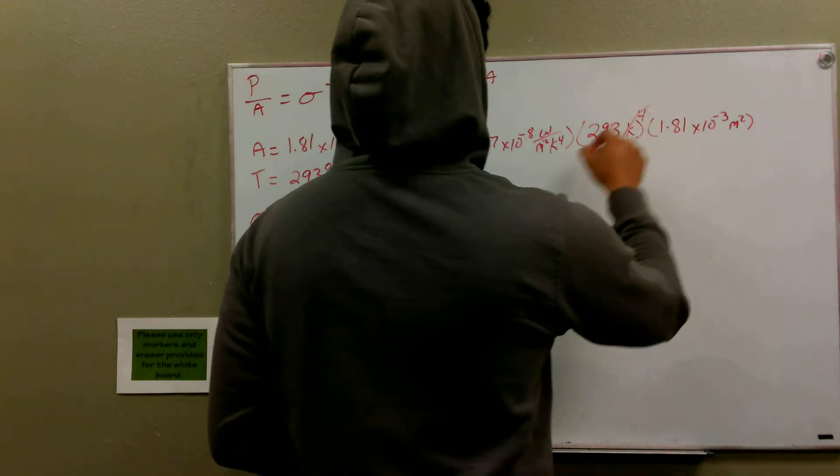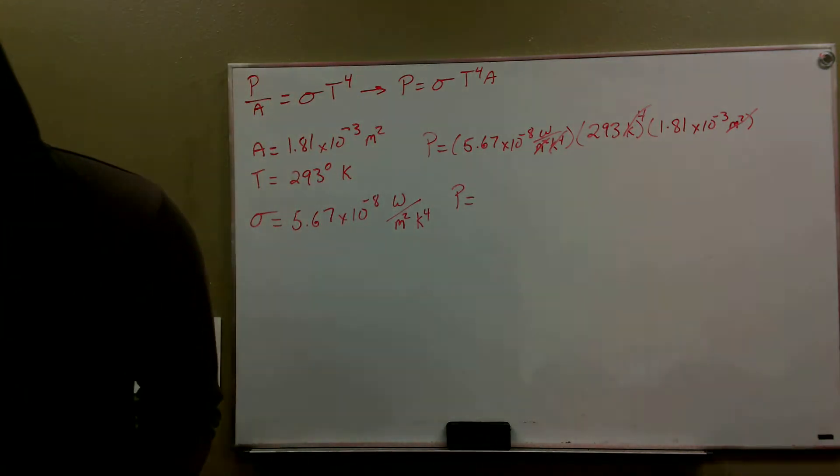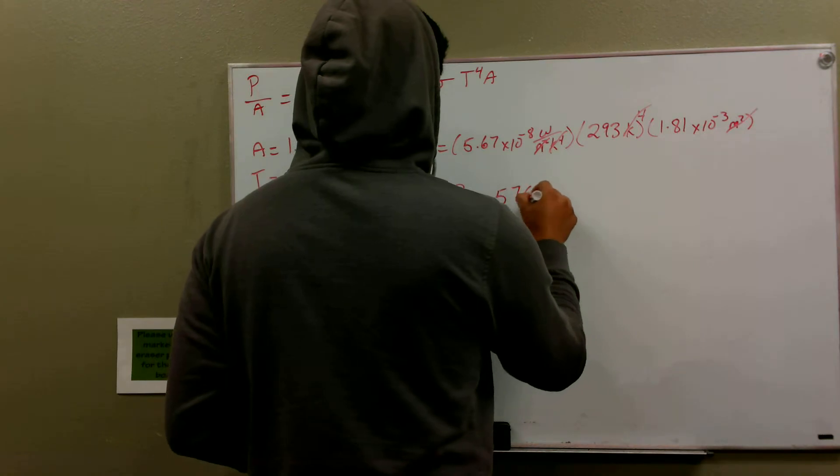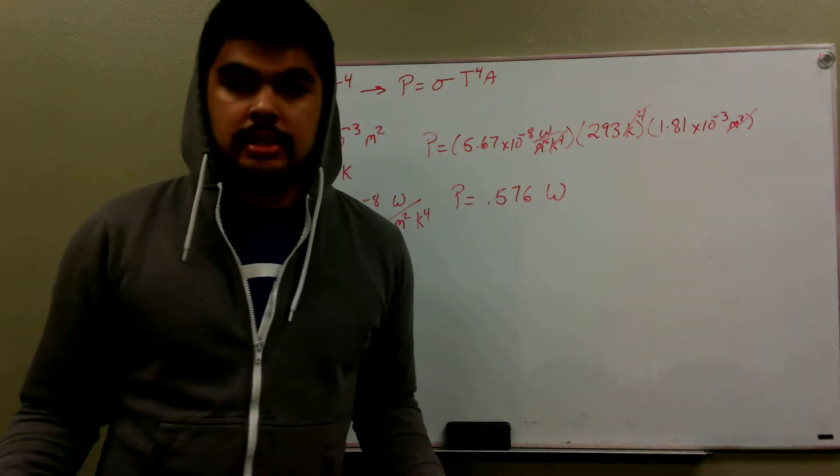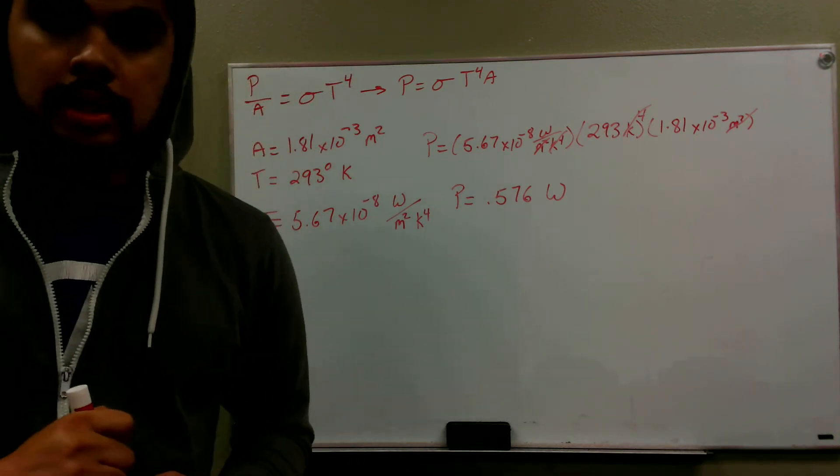our Kelvin to the fourth will cancel out here, our meter squared will cancel out here, and our final answer is 0.756 watts. And that makes sense for a basketball, it's not going to radiate much stuff. We will get a very low number.